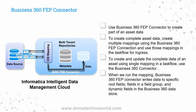In short, you can use the Business 360 FEP connector to create part of an asset's data, and build the complete dataset by developing multiple mappings orchestrated in a task flow. To create and update the complete data of an asset using a single mapping, use the Business 360 connector — not the FEP connector. When the mapping runs, Business 360 FEP writes data to specific root fields first, then to their corresponding child fields. If you want to load data into dynamic fields as well as field groups, use the FEP connector — it is very efficient for loading field groups, smart groups, smart fields, and dynamic fields. The normal Business 360 connection does not have that feature.